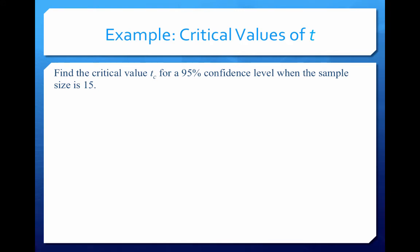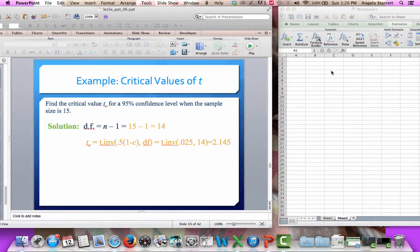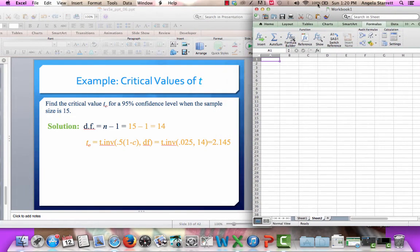Let's go through how we can find critical values of t. We want to find the critical value t subscript c for a 95% confidence level when the sample size is 15. When we want to get the critical values of t, it's going to be very similar to what we did with the normal distribution. We used NORM.S.INV to get the critical z's, and for critical t's we're going to use T.INV in Excel.